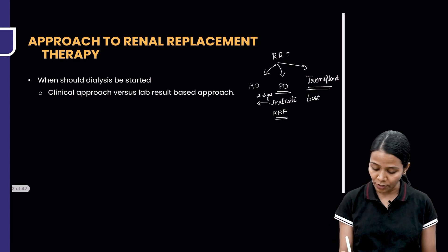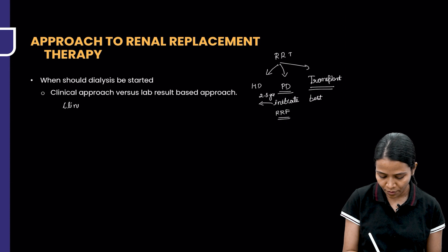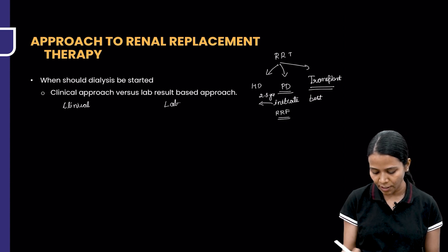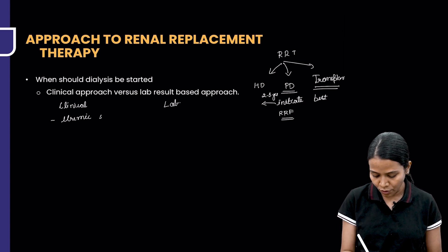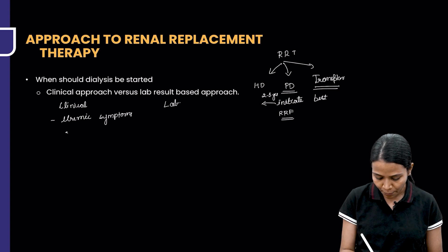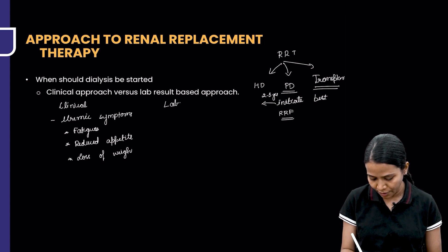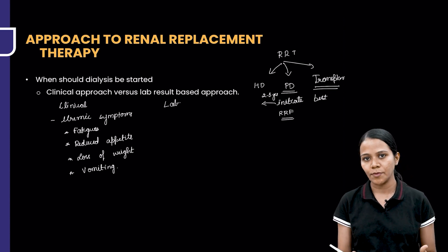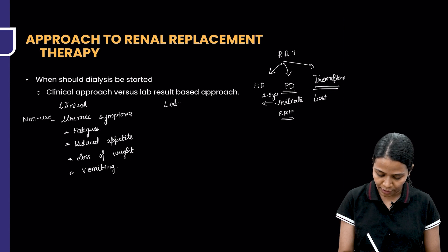Now if you decide to start on dialysis, when should it be started? There are two approaches: first is the clinical approach and next is the lab result-based approach. The clinical approach means the patient is going to have uremic symptoms — fatigue, reduced appetite, and loss of weight. Once the uremic symptoms start, irrespective of the level of urea or creatinine, you are going to start dialysis. This is the non-urgent indication to start dialysis.